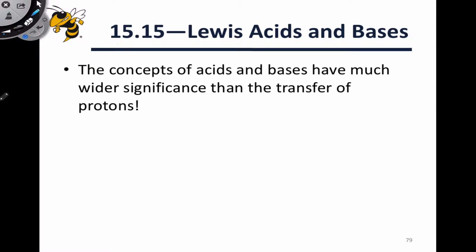Acidity and basicity as concepts go well beyond just the Bronsted definitions. In fact, acids and bases are found all over chemistry in almost any context where pairs of electrons are moving around. To demonstrate this and generalize ideas from Bronsted theory, I want to start with a Bronsted acid-base process which involves a proton donor B that always has a lone pair of electrons, and a Bronsted acid HA where this HA bond is polarized towards the A group, so that H is partially positive and A is partially negative.